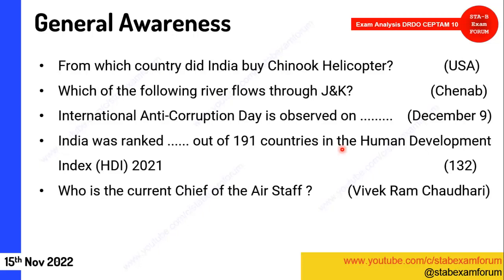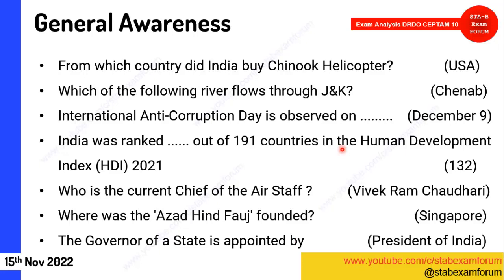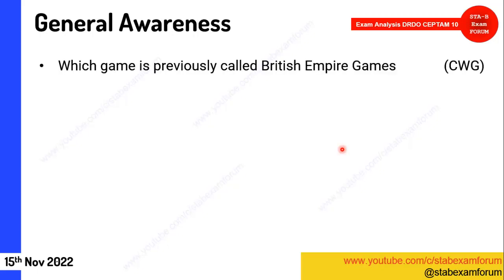The current Chief of Air Staff is Vivek Ram Chowdhary. Where was the Azad Hind Fauj founded — the answer was Singapore, not Japan. Who appoints the governor of any state — the President of India. Which game was previously called the British Empire Games — Commonwealth Games. This covers most of the General Awareness questions.